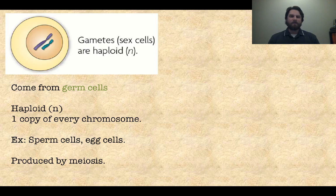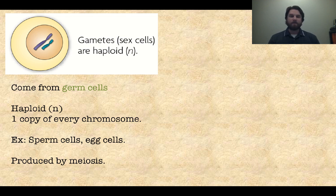Sex cells are also called gametes. They come from germ cells, which are the cells in testes or ovaries and things like that. These cells are haploid, meaning they only have one copy of every chromosome. An example of this is sperm or egg cells in humans. These gametes, or sex cells, are produced by meiosis — and that's the process we're going to talk about in this video, how it actually happens.